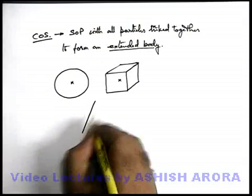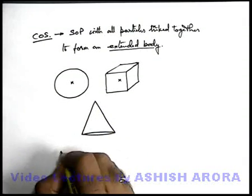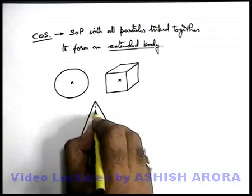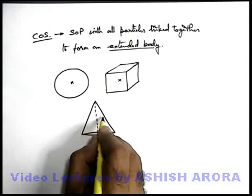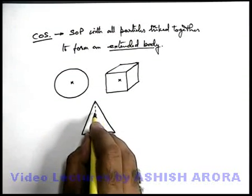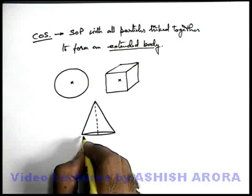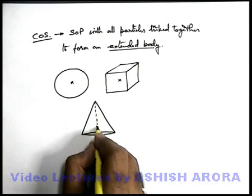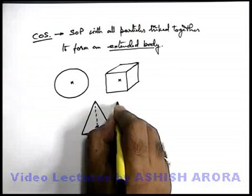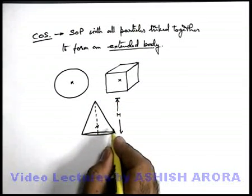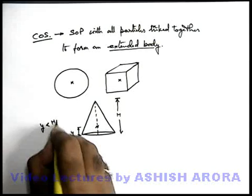Say if we talk about a cone. In case of a cone, it is not a symmetric object. Its lower half will be containing larger masses and the upper half is containing relatively lesser masses. So by observation we can state the centre of mass will be located below the midpoint of its overall height. Say if it is of height h, then its centre of mass will be located at a height y where y will be less than h by 2.